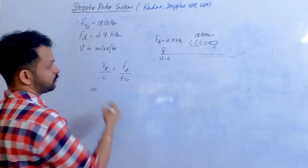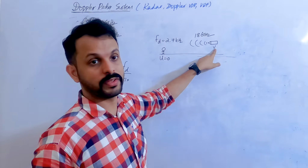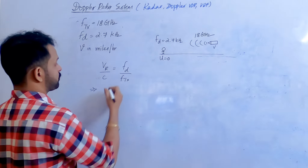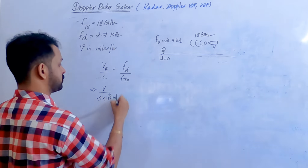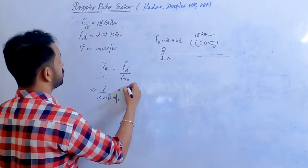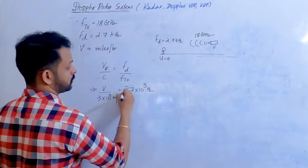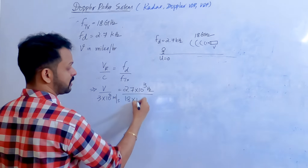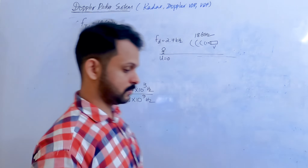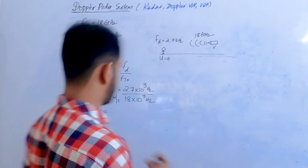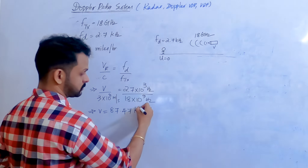Since one reference is stationary, the relative velocity is simply the velocity of the moving object. Therefore, velocity of the object divided by speed of light (3 × 10⁸ m/s) equals the Doppler frequency of 2.7 kilohertz (2.7 × 10³ Hz) divided by 18 × 10⁹ hertz. The answer is 45 meters per second, which is 87.47 knots.